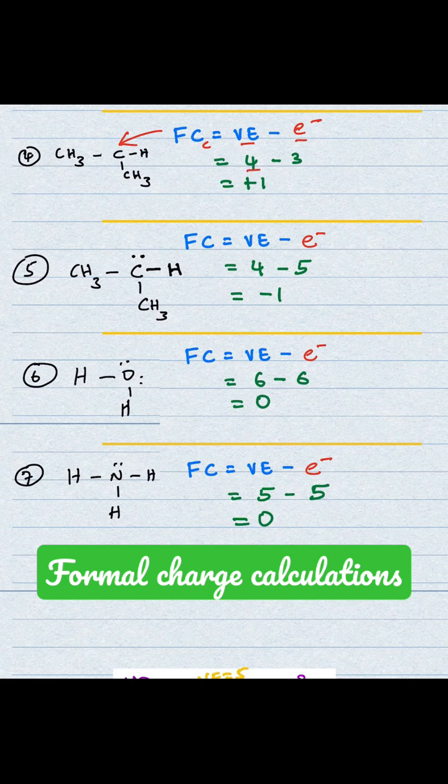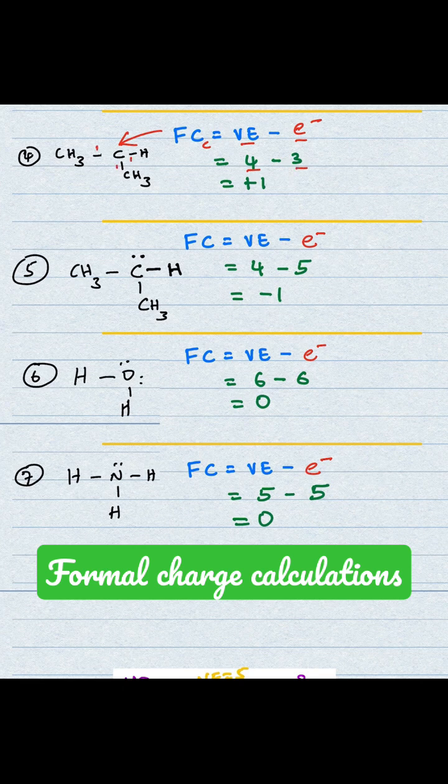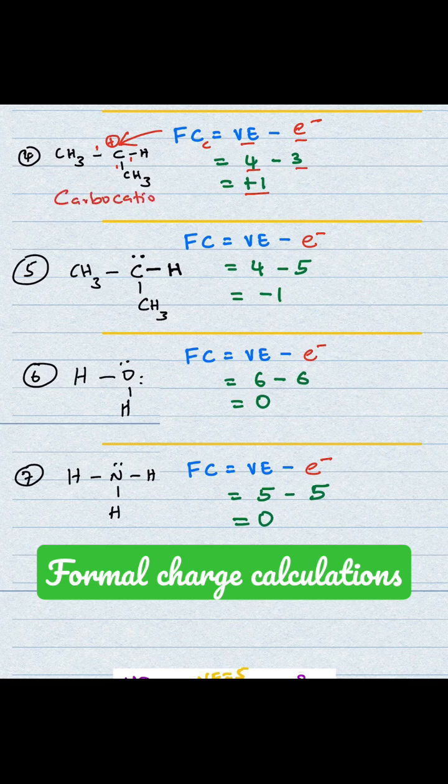The number of electrons around this carbon - it has 3 bonds. For each bond, you count 1 electron, so that's a total of 3 electrons. 4 minus 3 gives you plus 1, and therefore that carbon has a plus charge. That's called a carbocation, where you have a positive charge on carbon.